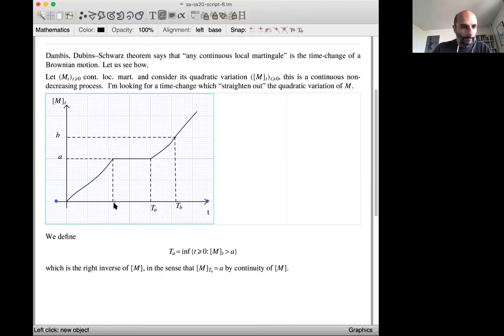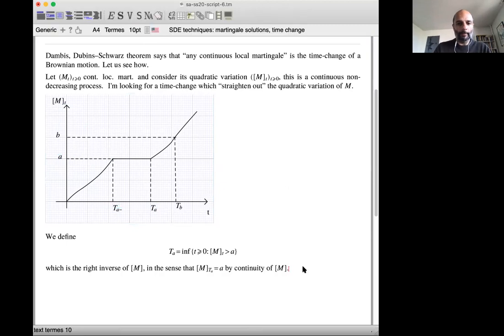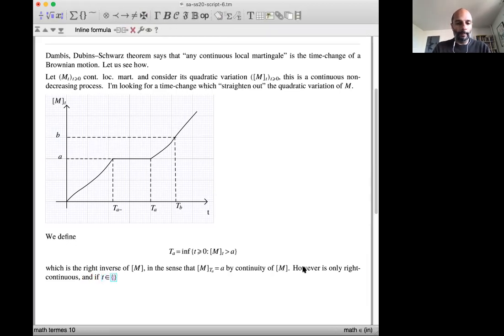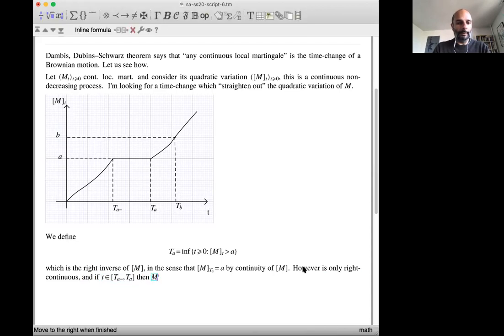And then the results, so these are the points which is important. And what is, well, this point is T of A minus. And so, however, is not, is only right continuous. And we can, one can have, and if T is in the interval, let's say, if this interval is non-trivial.